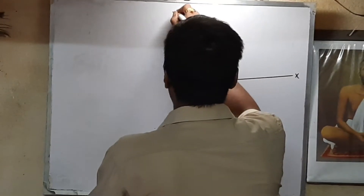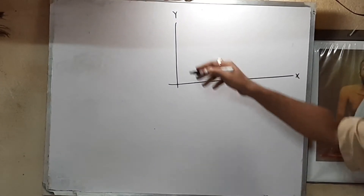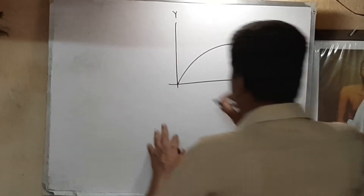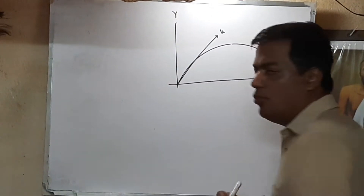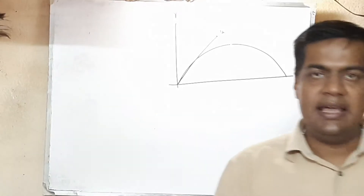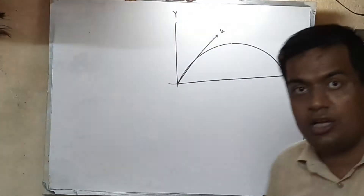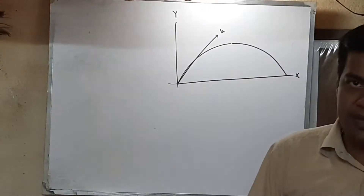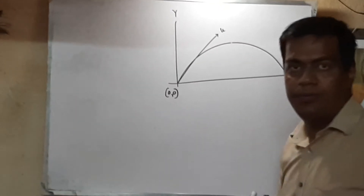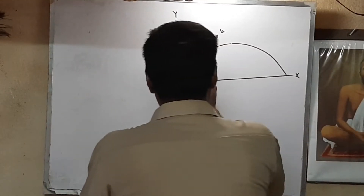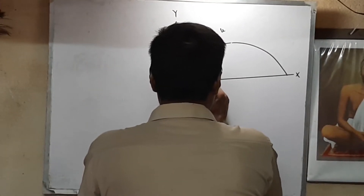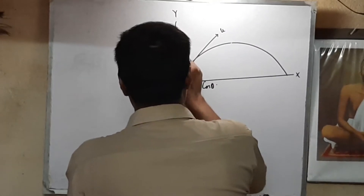We have taken our reference axes: this is the x-axis, this is the y-axis. The body is projected with some initial velocity u making an angle theta with the horizontal. When a body moves along a curve, you can draw a tangent at every point of this curve, and this tangent represents the direction of the instantaneous velocity at that point. Let the body be projected from the origin (0, 0) with initial velocity u. The initial velocity u can be resolved into two rectangular components: u cos theta along the horizontal, and u sin theta perpendicular to that.